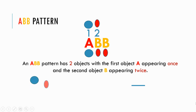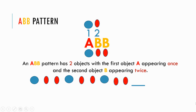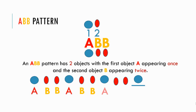Circle, oval, oval. Circle, oval, oval. Circle, oval, oval. Do you know what comes next? It is a circle. So you see our ABB pattern is circle, oval, oval, and then it repeats itself: A, B, B, A, B, B, A, B, B.